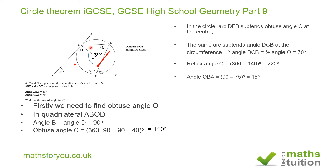Now, in the quadrilateral B, C, D, O, we know three of the angles in this quadrilateral, and the sum of the interior angles of a quadrilateral is 360. Therefore, the angle ODC has got to be 360 minus 220 minus 70 minus 15, and that gives the angle ODC the size of 55 degrees.